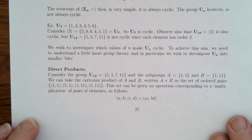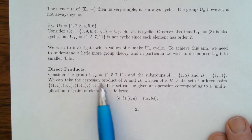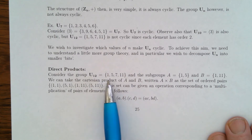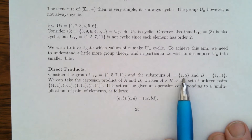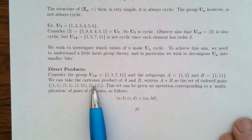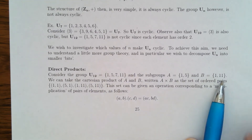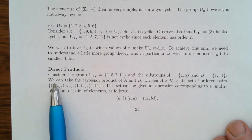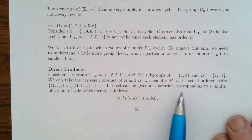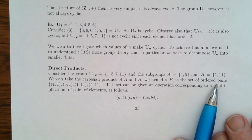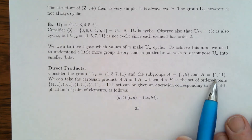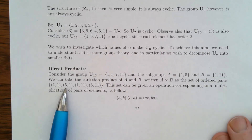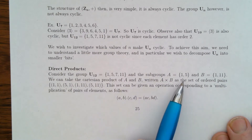I'm going to introduce the notion of a direct product. Consider the group U_12 — these are all the numbers relatively prime to 12 and less than 12: {1, 5, 7, 11}. I have two subgroups: A = {1, 5}, which is a subgroup because 5 squared is 1 mod 12, and B = {1, 11}, since 11 is the same as −1 and 11 squared is 1 modulo 12. We can take the Cartesian product A × B, which is the set of ordered pairs taking the first element from A and the second from B.